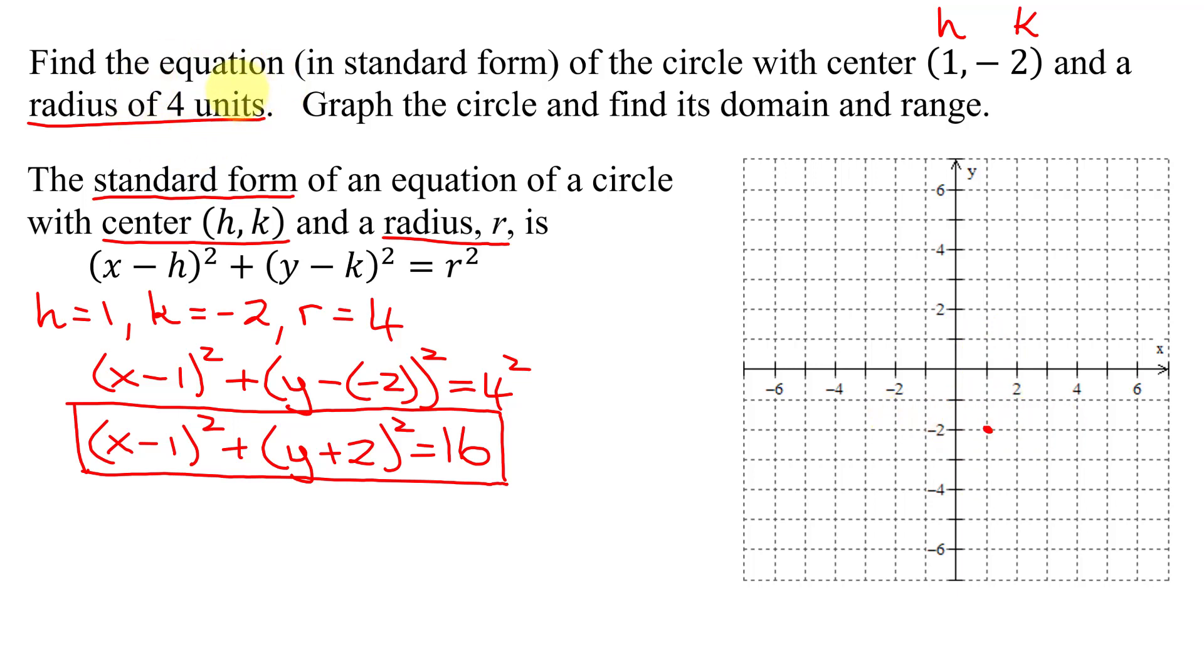The radius is 4 units, so you go up 4: 1, 2, 3, 4. Down 4: 1, 2, 3, 4. Left 4: 1, 2, 3, 4. And finally right 4: 1, 2, 3, 4.